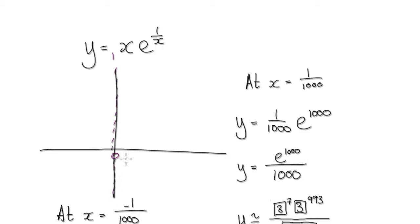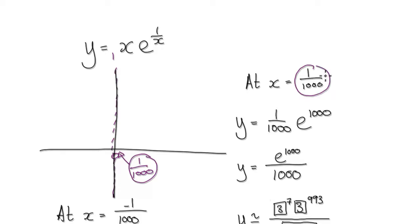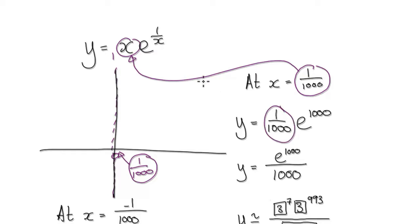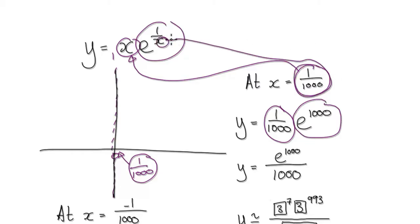Let's investigate what happens just to the right of zero — say, one over a microscopic distance just to the right of zero. Let's randomly choose x equals one over one thousand. You would put this into the equation, so this term here would be e to the power of one over one thousand.